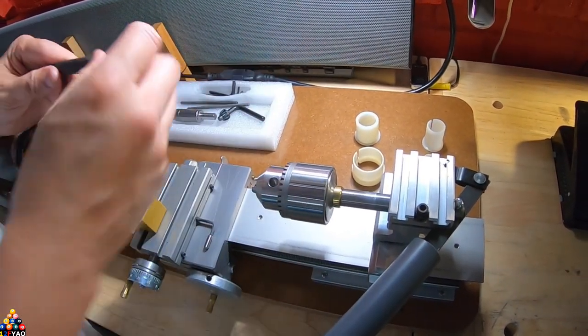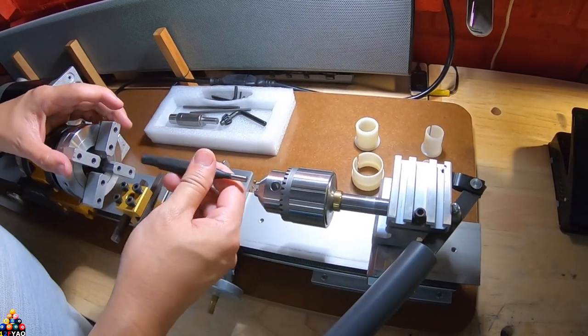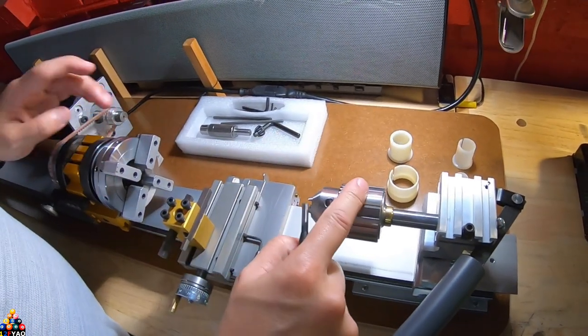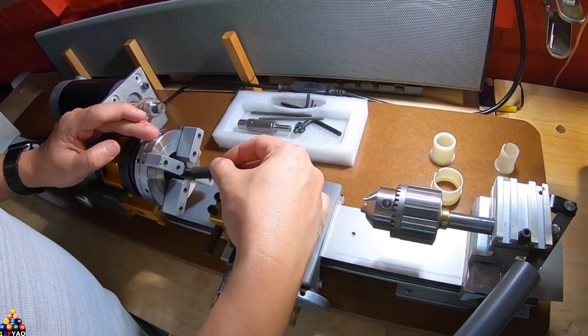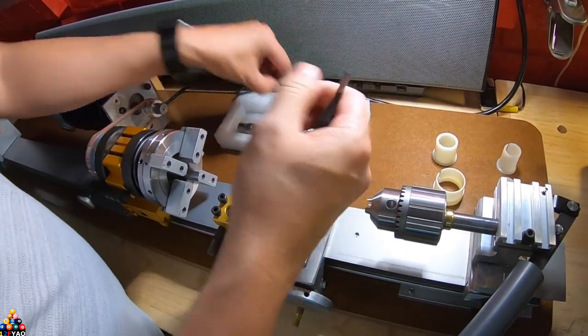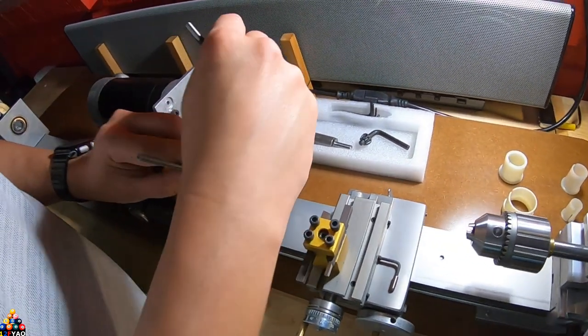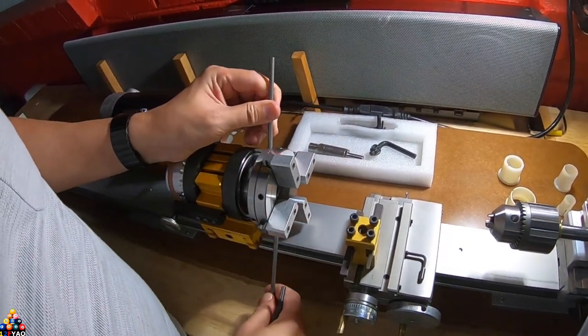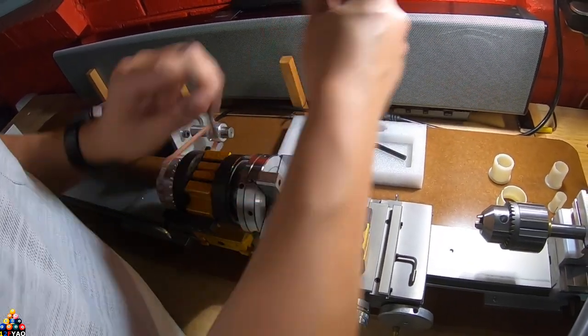And this tool took me a while, this is how you would actually help align your tailstock into your headstock. You would insert it here and with these rods you can actually close it and open it. Going this way would open it, going this way would actually close it.